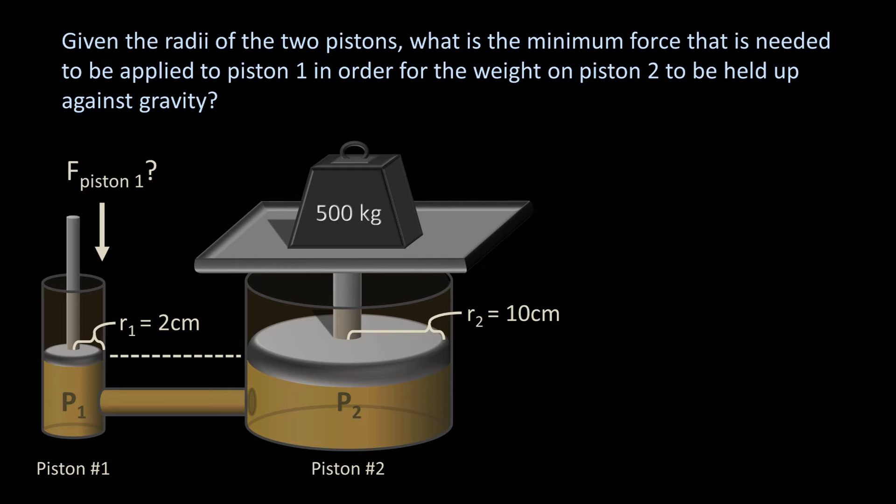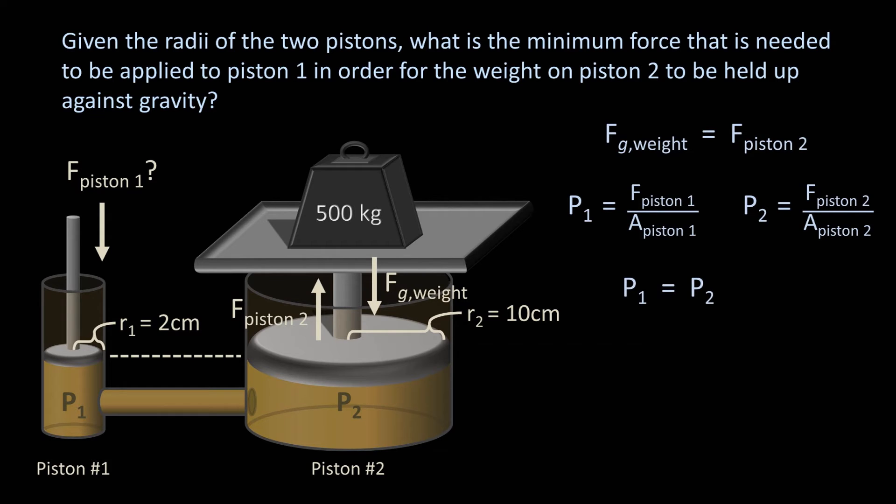So the force of gravity due to the 500 kg weight must be equal in magnitude to the force imparted on piston 2 by pressure in the fluid. Since pressure equals force divided by area, we know that the pressure in piston 1 equals the force of piston 1 divided by the area of piston 1. The same relationship holds true for piston 2. The key principle to solving this problem is to recognize that the pressure in piston 1 must equal the pressure in piston 2 as a consequence of Pascal's law.